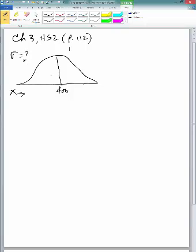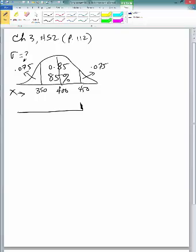But we do know that the probability that demand will be between 350 to 450 is 0.85 or 85%. That means that these two areas combined is 15% or 0.075, 0.075. That means that from this point all the way to the left tail of the normal curve...